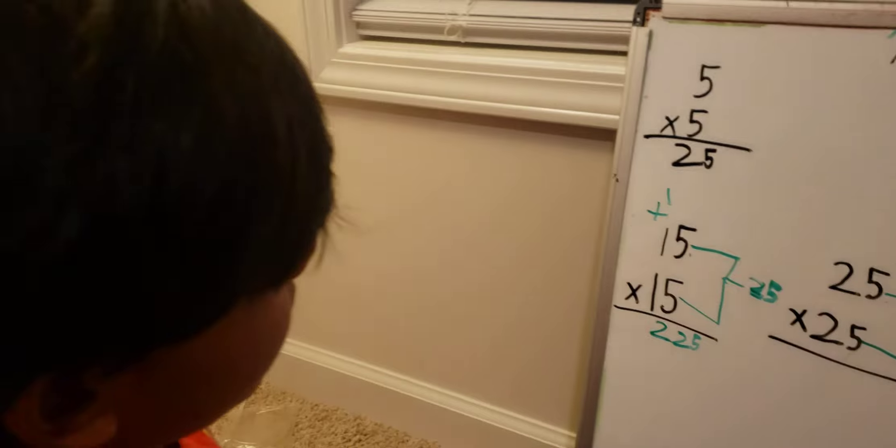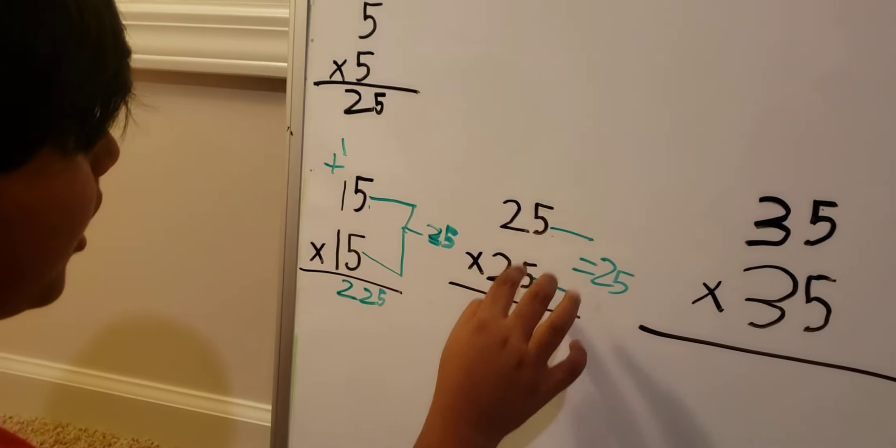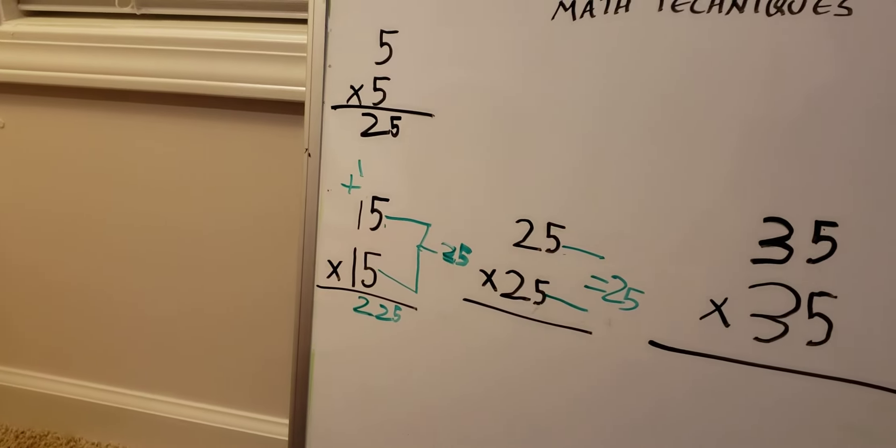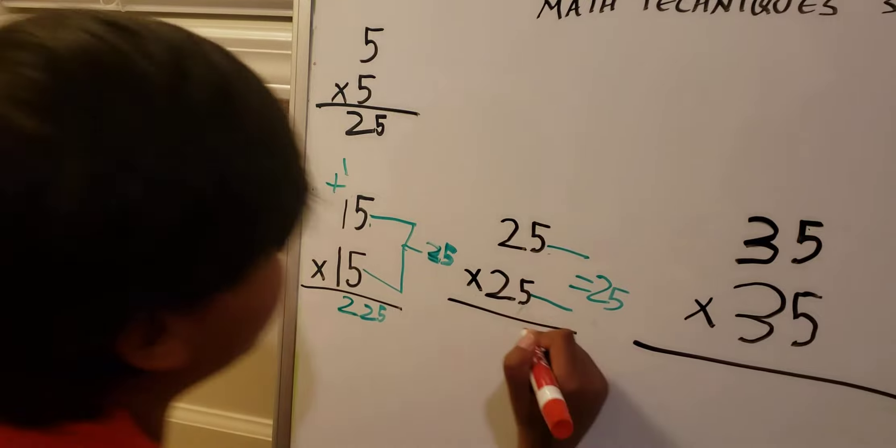25 times 25, it's the same thing. Multiply 5 in the ones place, then multiply that to make 25.